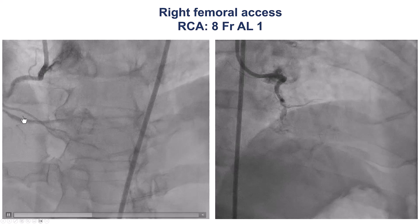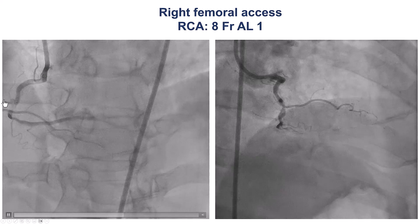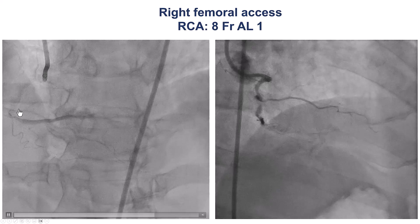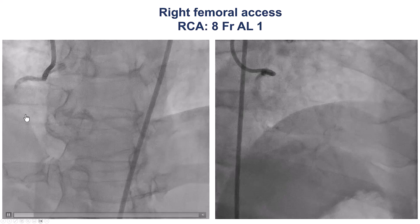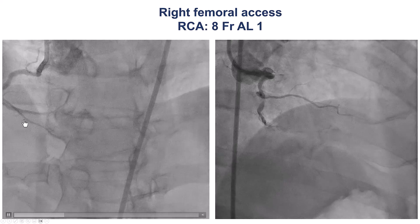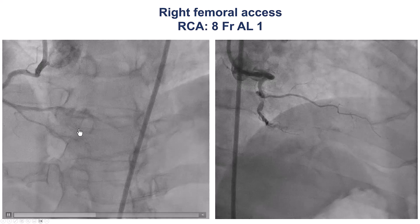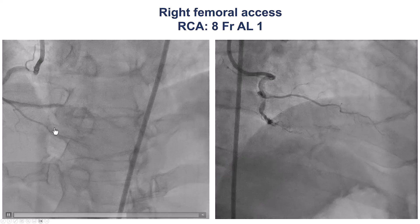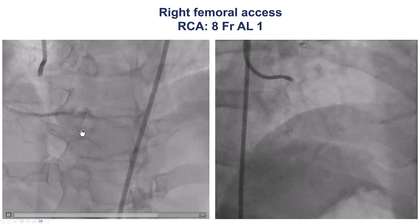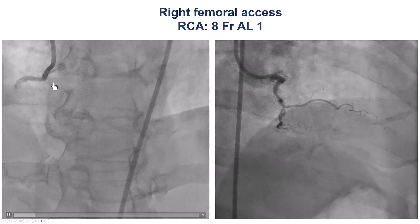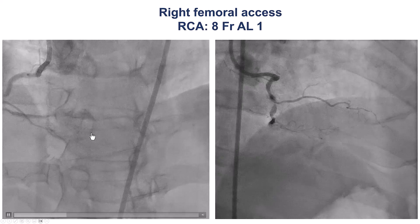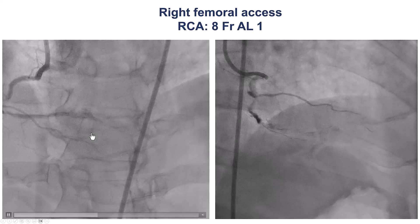There is heavy calcium. It looks almost like a total lesion, but there is antegrade flow. The distal vessel also has some calcification and a distal lesion. The flow is TIMI 2.